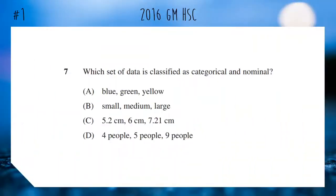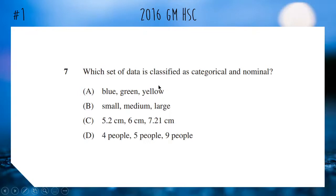Here's the first one from the 2016 general maths HSC: which of the following sets of data is classified as categorical and nominal? Hopefully you noticed that C and D are numerical data, so that rules them out. A and B are categorical. We'd call the set in B ordinal data because we can order it from smallest to largest. However, in option A there is no clear order — it's called nominal. So the answer is A.